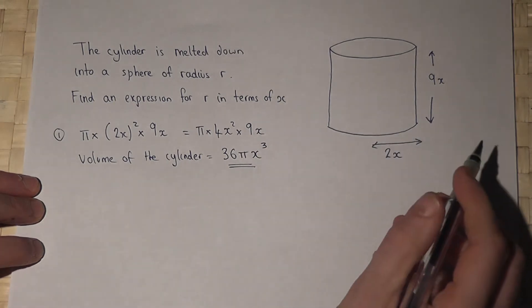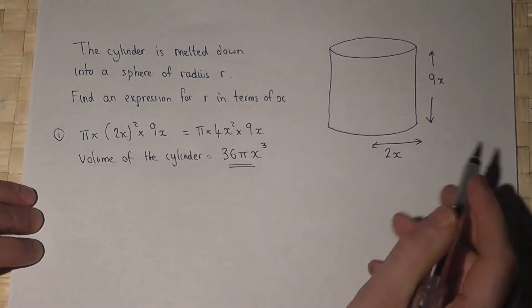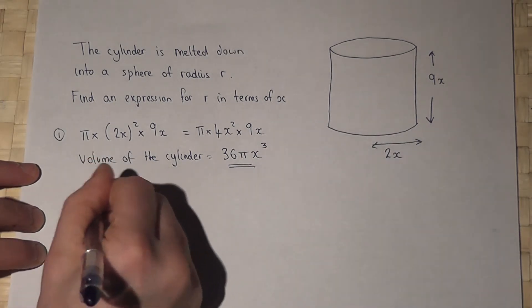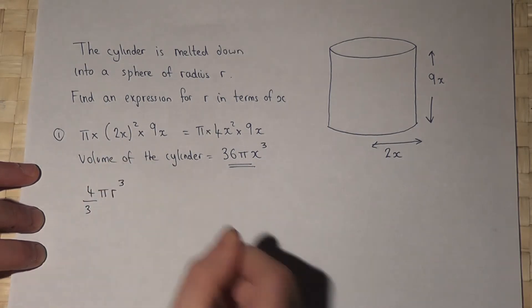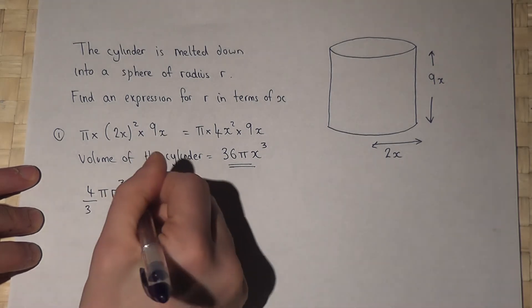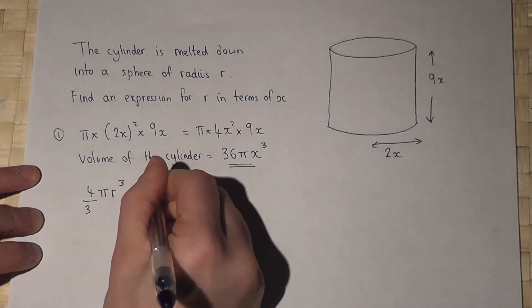Now the volume of the sphere is given by 4/3 πr³ and this sphere must equal this volume here.